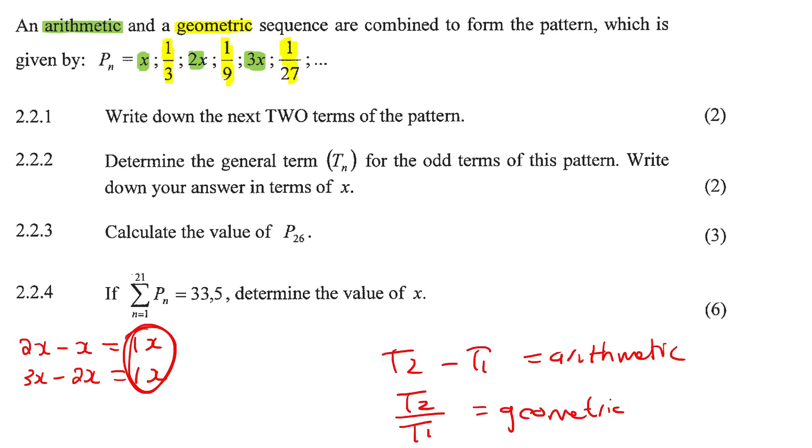The first question says write down the next two terms. So it's going to be this one that comes next. So there would be 4x. Then the next one would be this pattern. So you would just multiply that by 1 over 3 and that would give you 1 over 81. So those would be the next two terms.